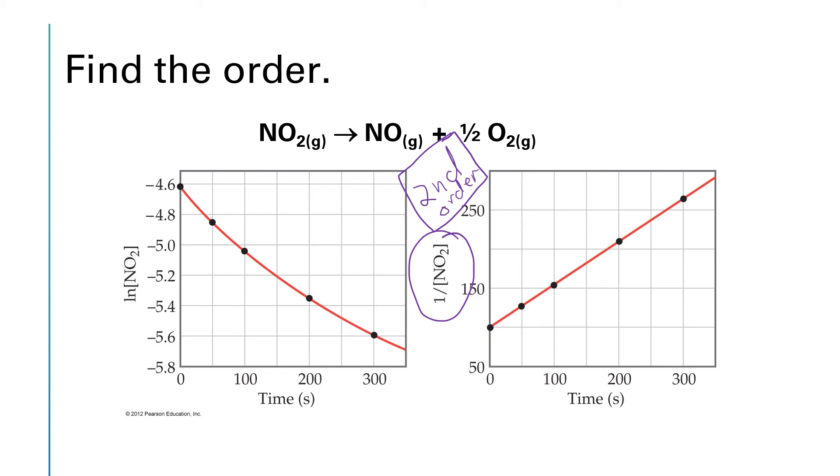We just need to pick two data points on the graph and calculate the slope between them. I'm going to pick two data points that look like they're pretty close to grid lines. I'm going to go with this data point at time zero and this data point at time 100.